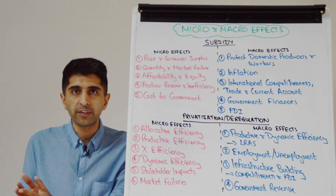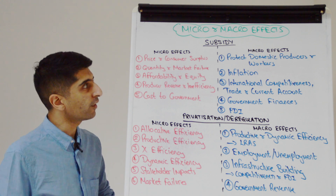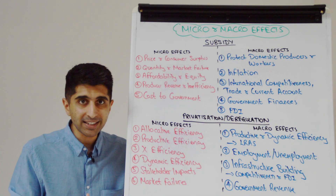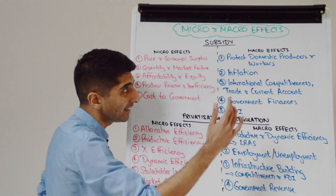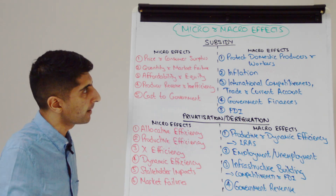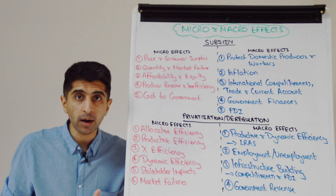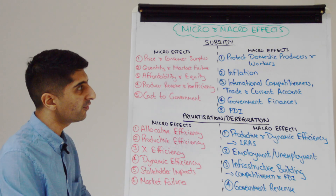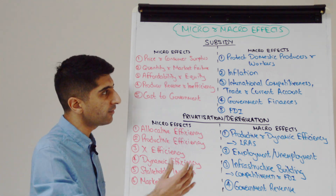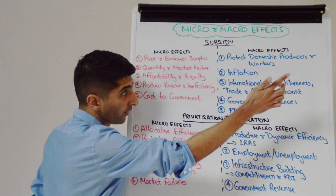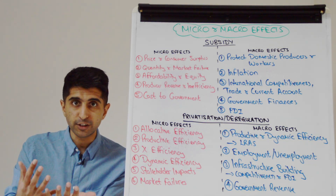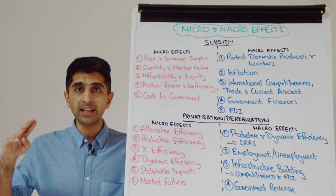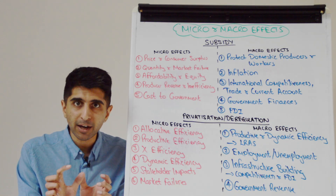We can also talk about the impacts on producer revenue, how it can promote inefficiency for private businesses, and the cost to the government as a stakeholder. On the macro side, a subsidy can act as a protectionist measure — protecting domestic producers, industry, and workers. Widespread subsidies can shift SRAS to the right and reduce cost-push inflation, improve international competitiveness, attract FDI, and if linked to the budget deficit or national debt, it becomes a clear macro effect.